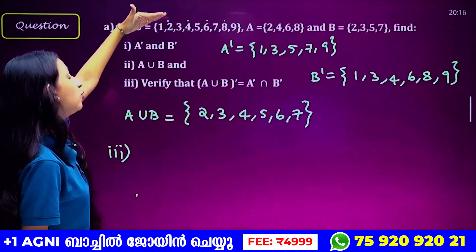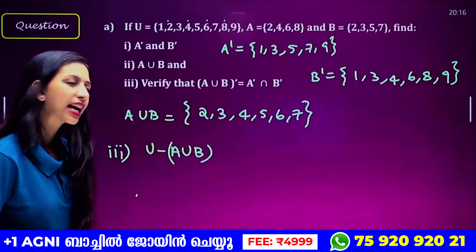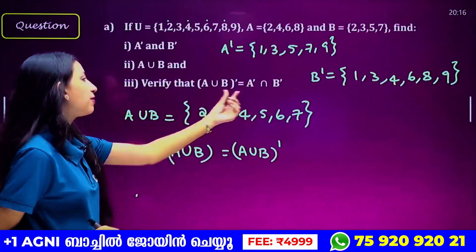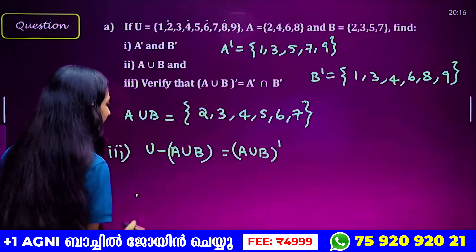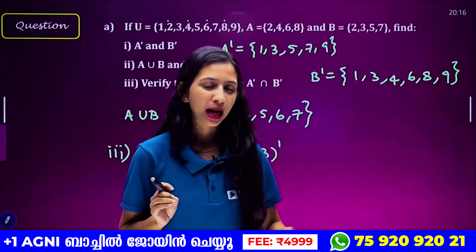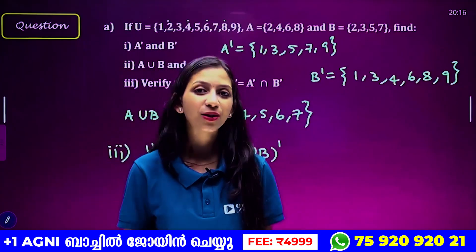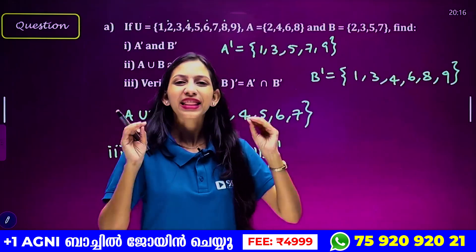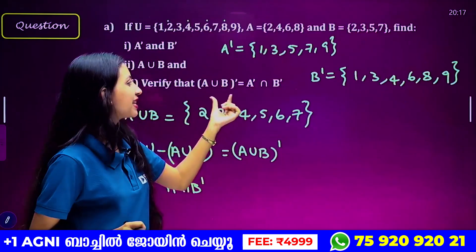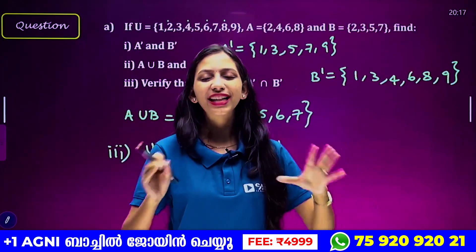A intersection B complement. That will verify. A union B complement — what is A union B? A union B is a complement. You need A union B, then we give you A union B complement. Then we have A intersection B complement and A intersection B complement. We will verify LHS and RHS. If you want to do anything, you will need to do it. So first: A union B complement, then A intersection B complement.